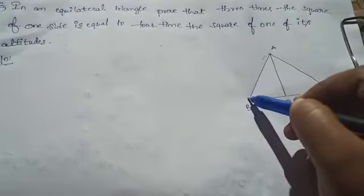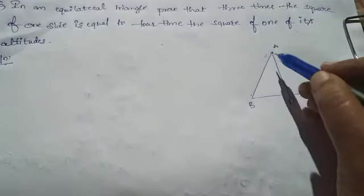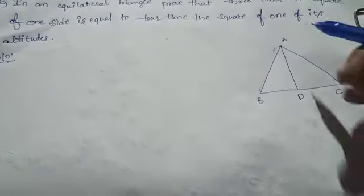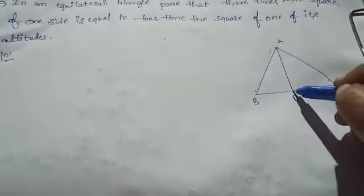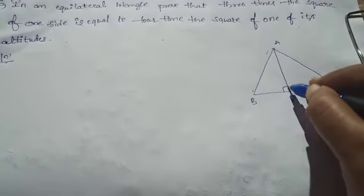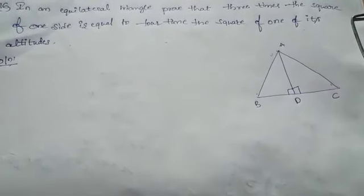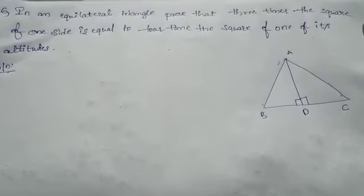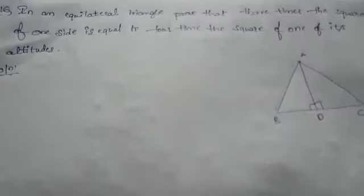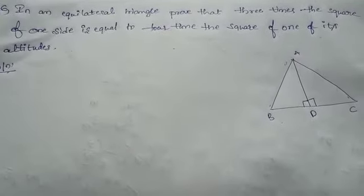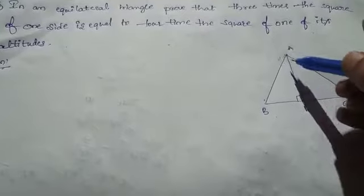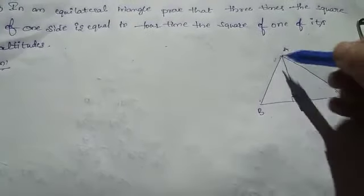This is the equilateral triangle ABC, and AD is the altitude of triangle ABC. AD is one of its altitudes.